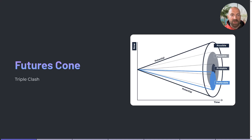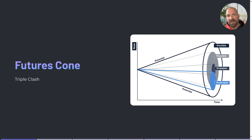In today's video we are going to look at another commonly used futures thinking tool. It's the futures cone, also known as the cone of plausibility. This is a tool that helps us to visualize different types of futures: possible, probable, and preferable.